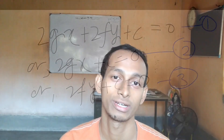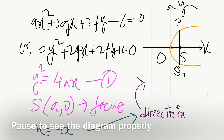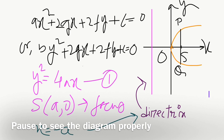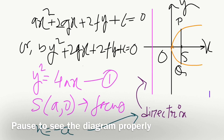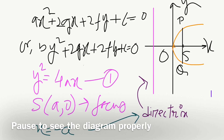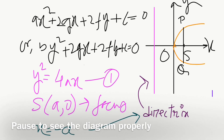If the x squared term, or maybe the y squared term, but not both simultaneously — that is, either x squared or y squared is present — and the other term with single degree of x or y is present, then it will form a parabola.